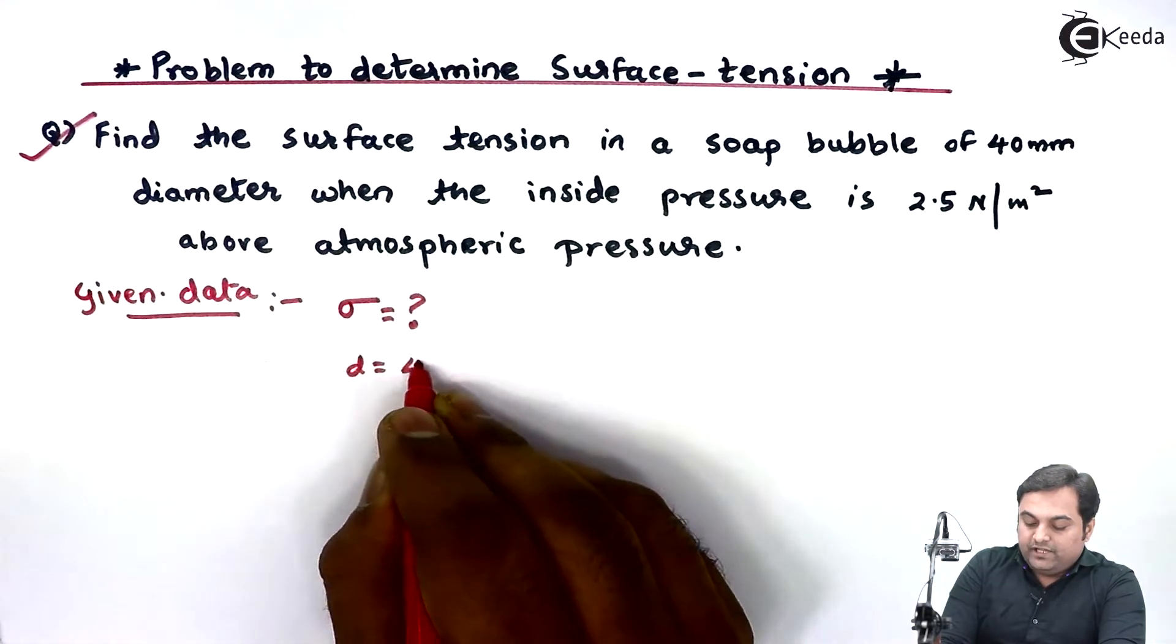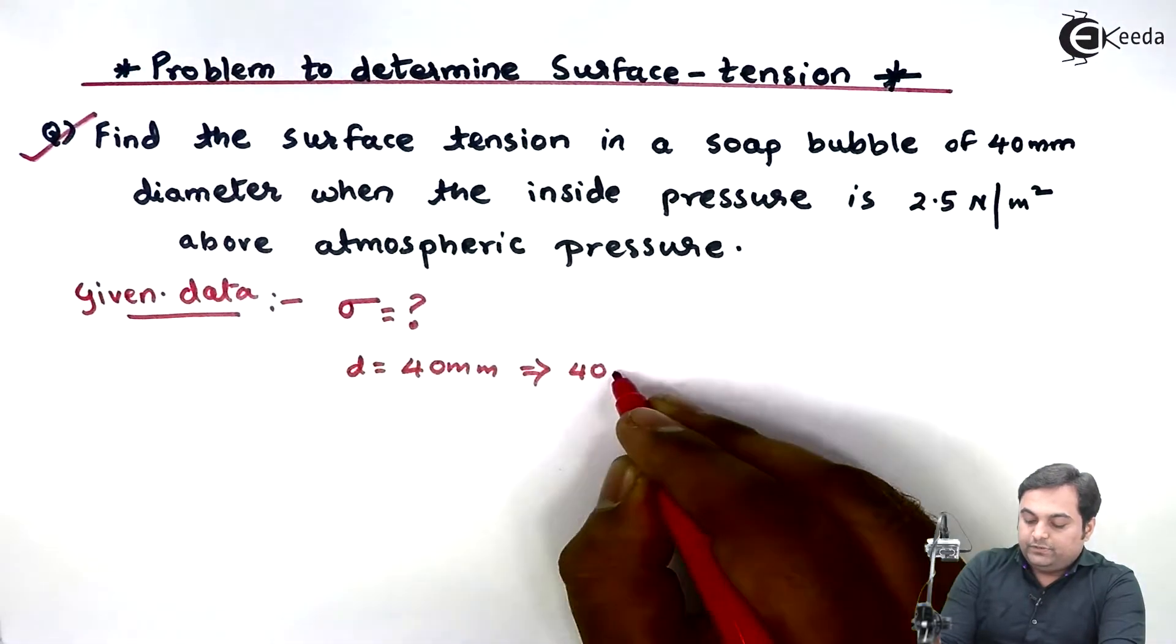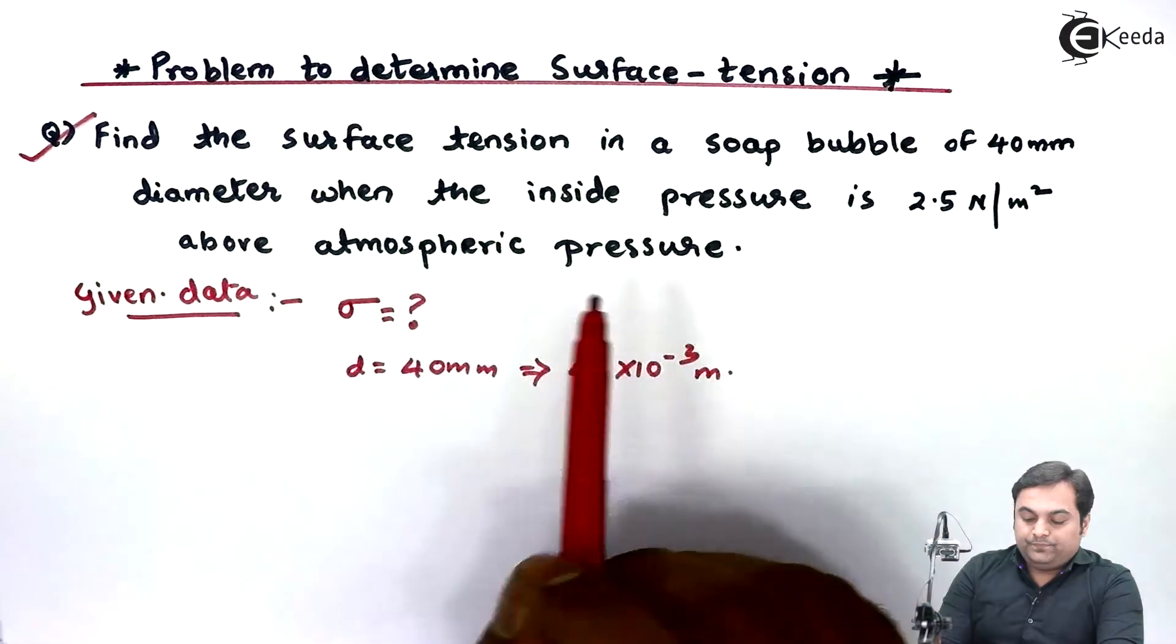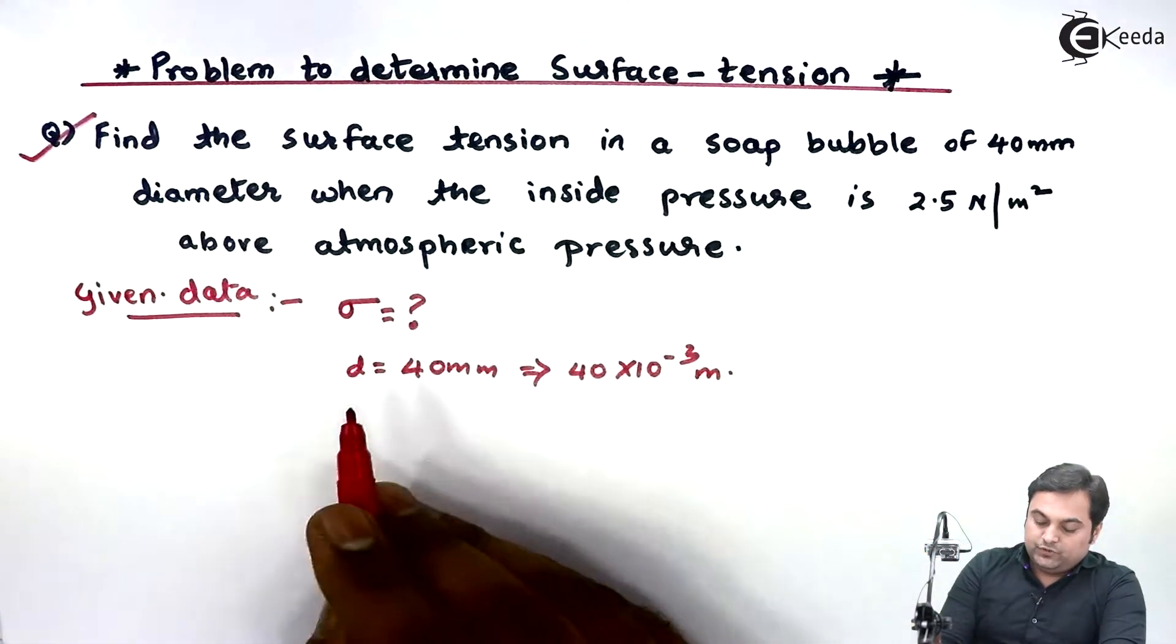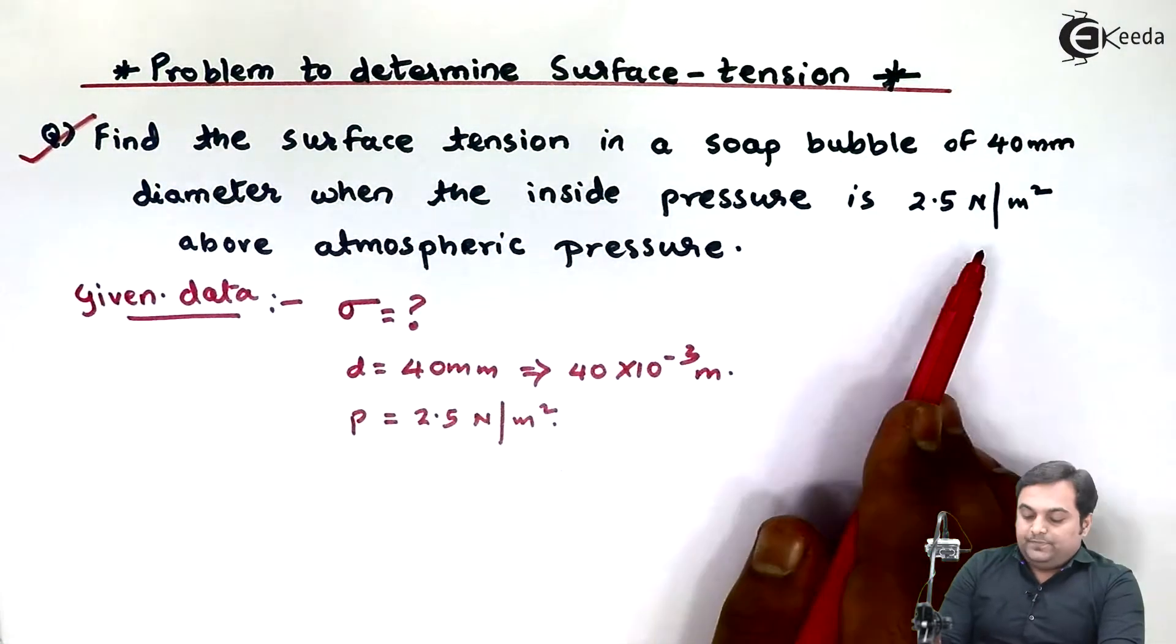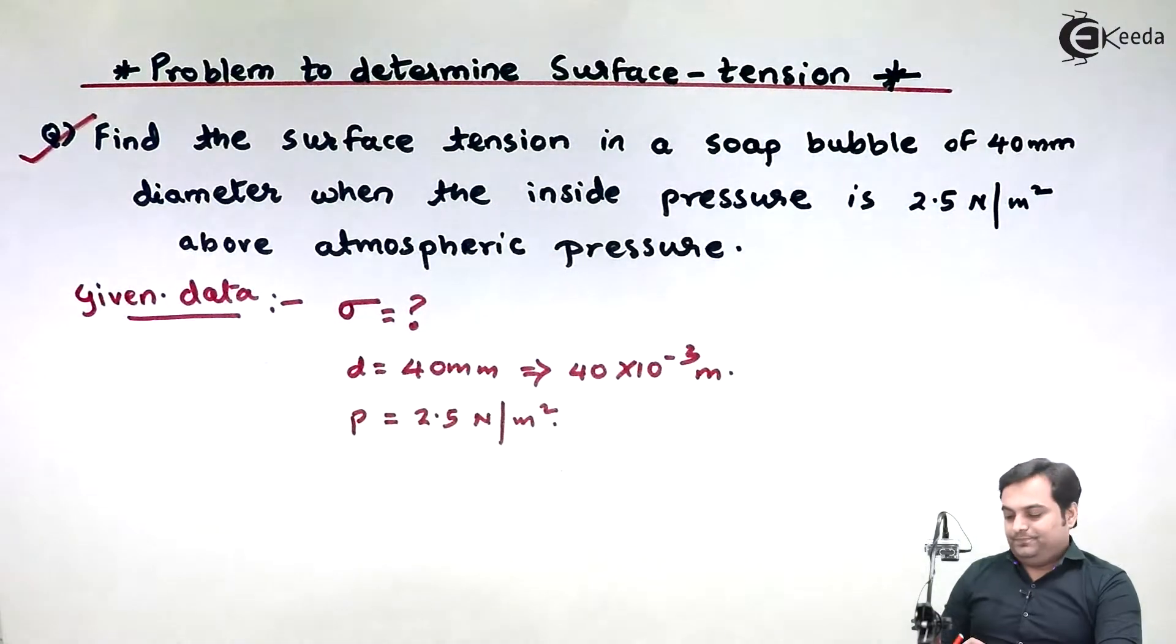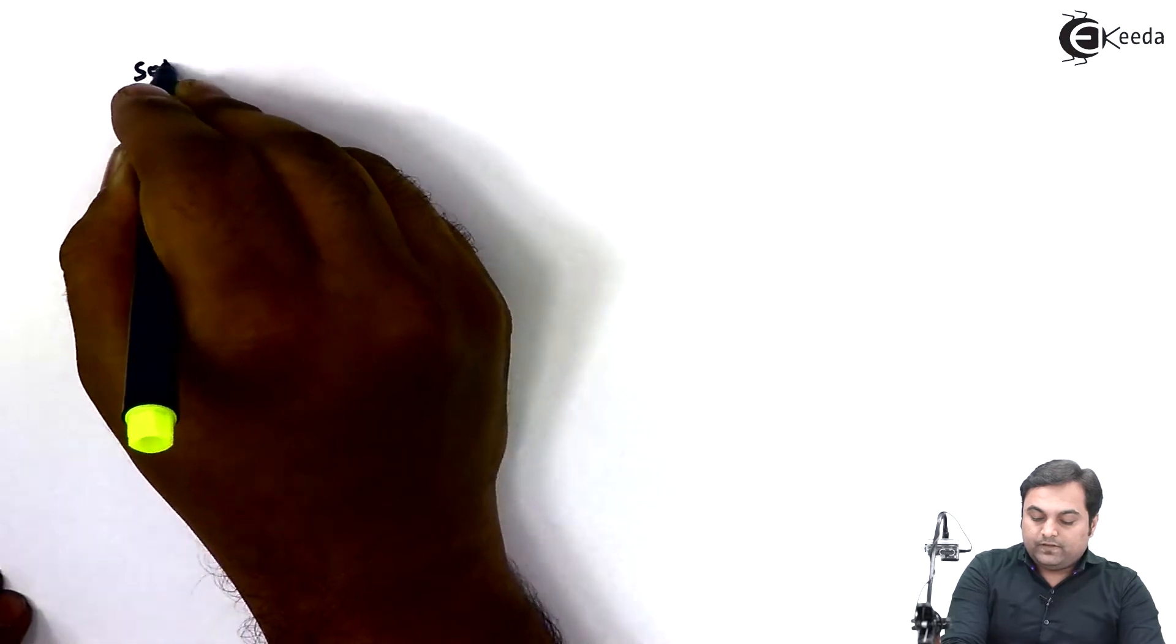The diameter of the soap bubble is 40 mm, so that is 40 × 10^-3 meters. The inside pressure is 2.5 Newton per meter square above atmospheric pressure. This is the given data. Let us try to get the solution for this problem.